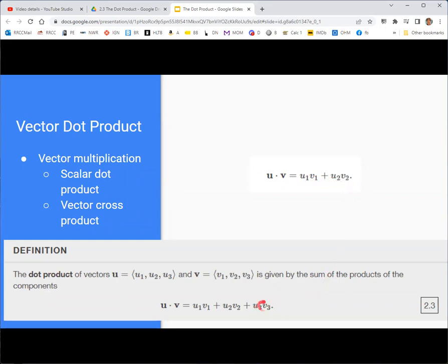And if they're in three dimensions, you multiply their third components and add them all together. Now, this does result in a scalar, and so it's sometimes referred to as the scalar dot product. The vector product is a cross product, and we'll talk about that in the next video.